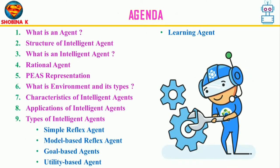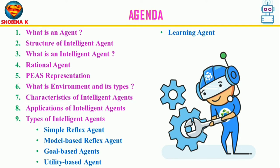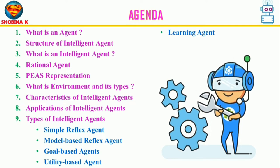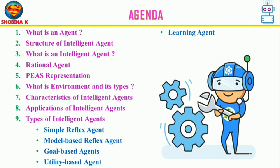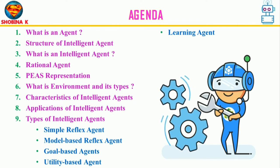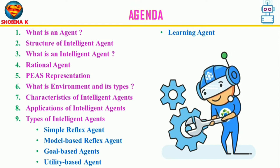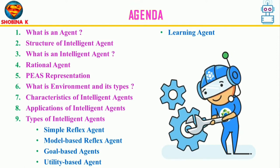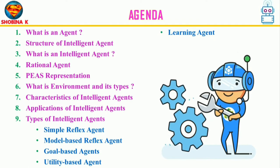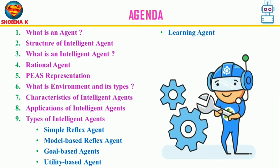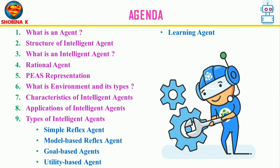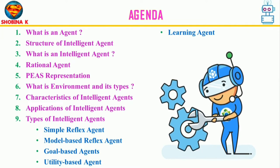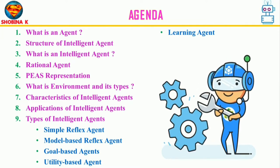Today's agenda begins with what is an agent, then the structure of intelligent agent and how it works, followed by rational agent. After that we will cover PEAS representation, agent environment types, characteristics of intelligent agents, applications of intelligent agents, and finally the types of intelligent agents.